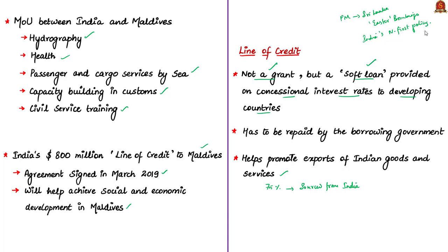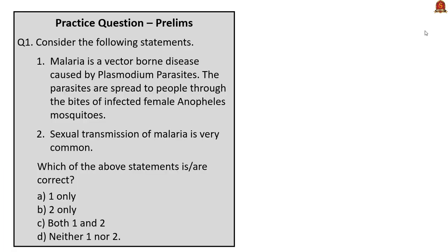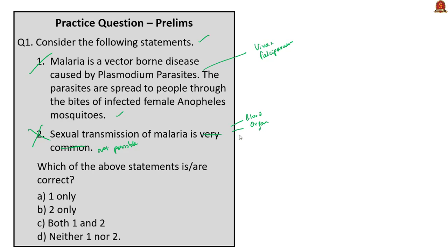We now move on to the practice question discussion session. The first question asks about malaria. The first statement — that malaria is a vector-borne disease caused by Plasmodium parasites, especially Plasmodium vivax and Plasmodium falciparum, spread through bites of infected female Anopheles mosquitoes — is correct. The second statement is wrong, as sexual transmission of malaria is not possible; in rare cases it can be transmitted through blood transfusion, organ transplant, or shared needles. The correct answer is option A, only statement 1.